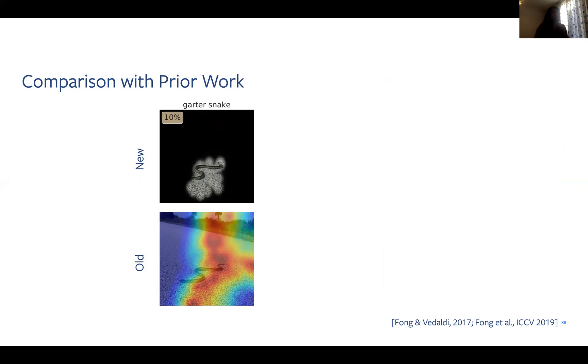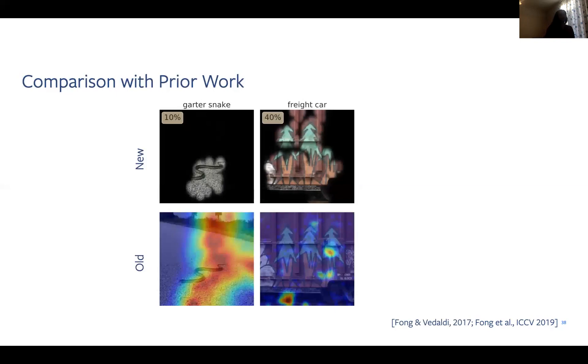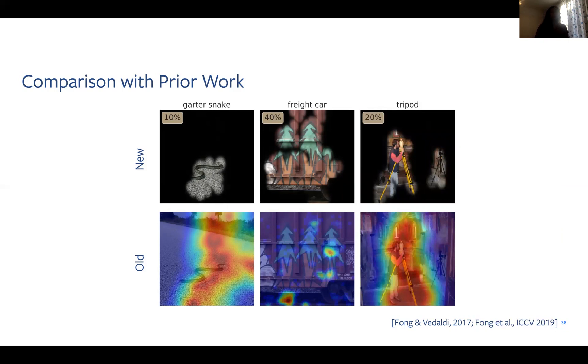Here are a few examples comparing our new method on the top with our prior work on the bottom that demonstrate our improved stability and sensitivity. Here, our new method is able to localize the snake, while the old method yields an unstable mask. The same is true for this freight card example. Lastly, we're now able to capture multiple object instances like these two tripods. Our previous method could only capture a single component.